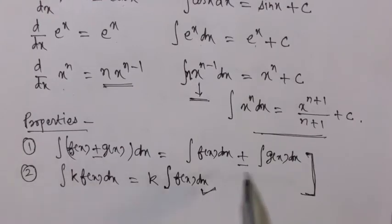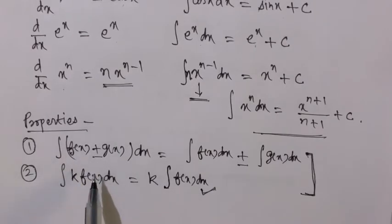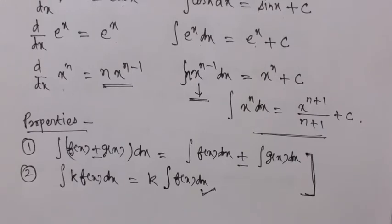This property is called the property of linearity — we treat constants as coefficients and handle them separately. For sum and difference we can use these properties directly. If two functions are multiplied together, we use integration by parts. If we have a rational function (two functions divided), we use the method of partial fractions.